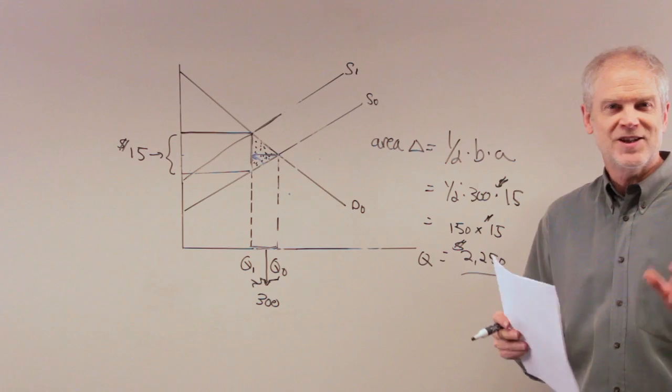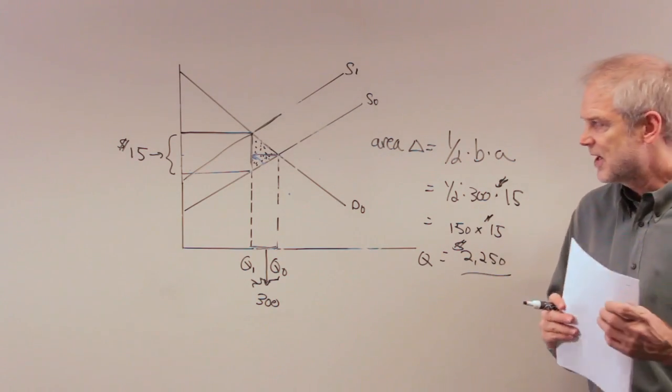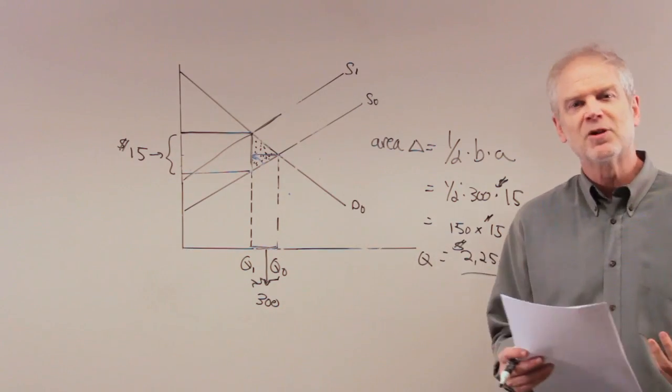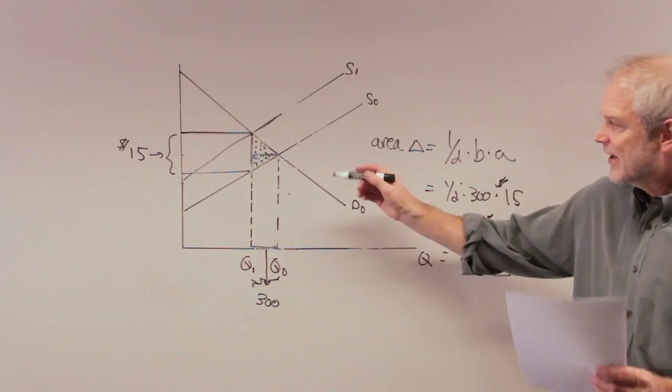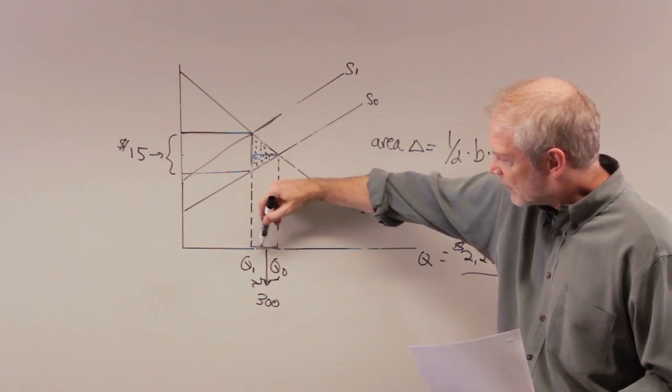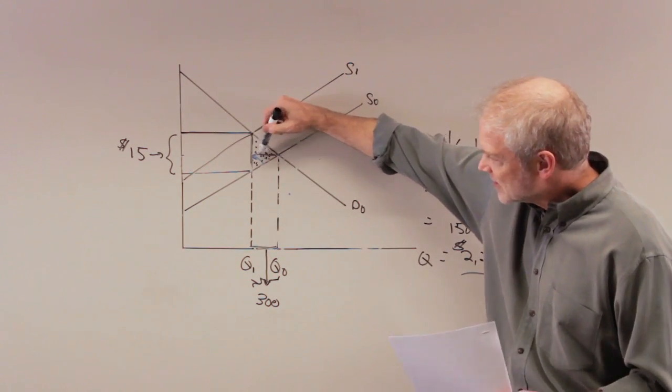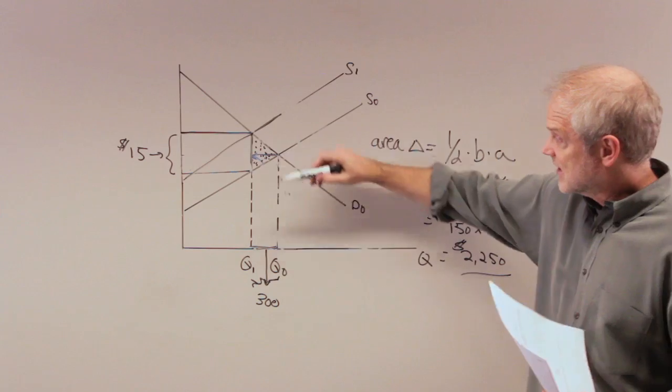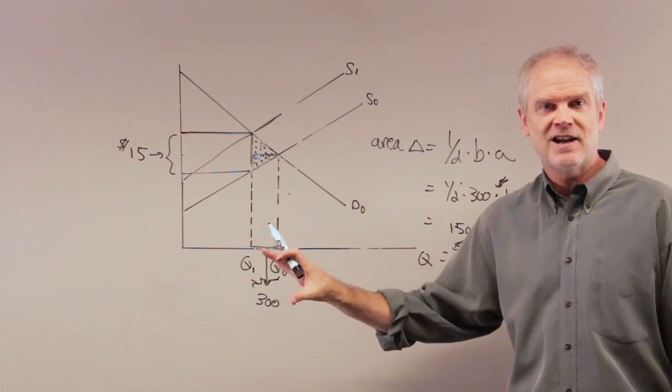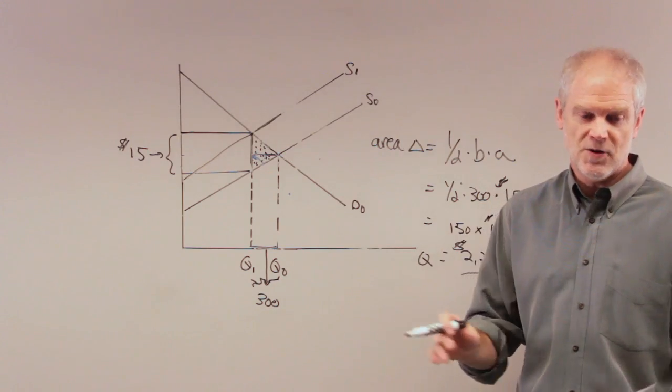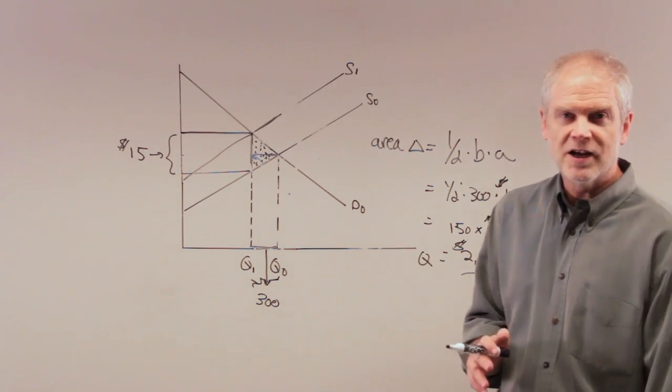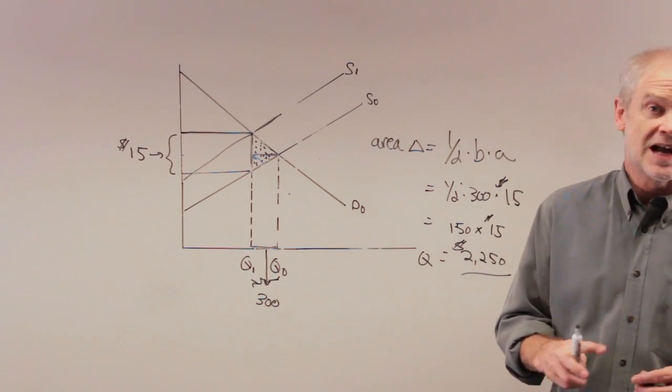But it's important that you get in the habit of drawing things. Because if you don't draw them, it's sometimes hard to visualize what numbers you should be multiplying by each other. And here you get a very clear sense of it. Once you knew the equilibrium quantity had fallen by 300, you know this distance right here. Once you know the size of the tax, you know this distance right here. It's obvious if you get the diagram down and move from there. Okay? So that's number 2. I will now go to number 3. More diagrams. More consumer producer surplus. I'll be back in a second.